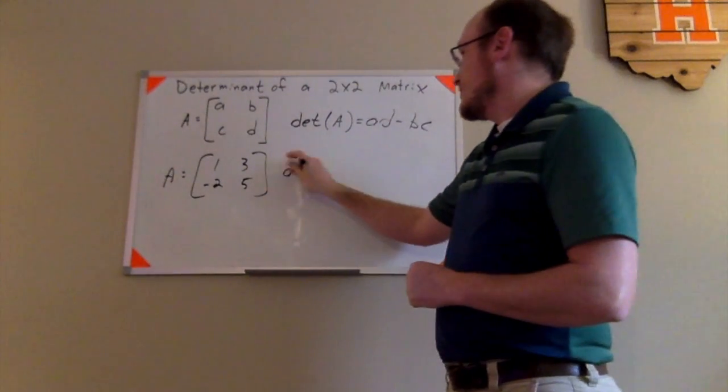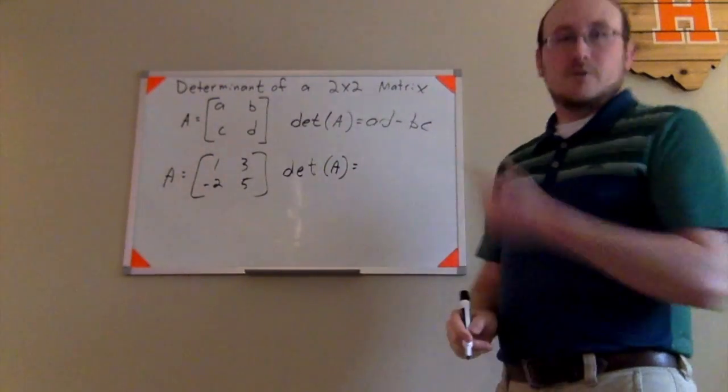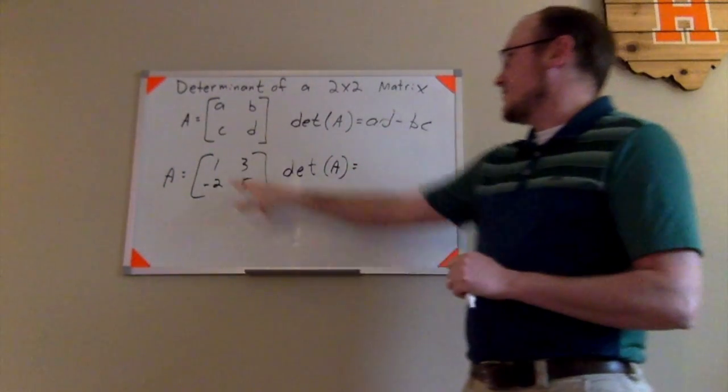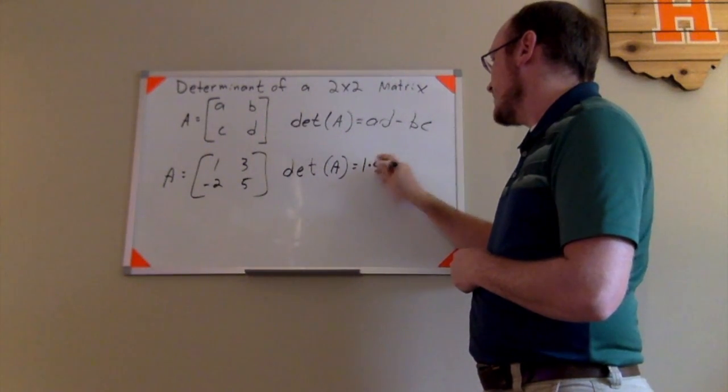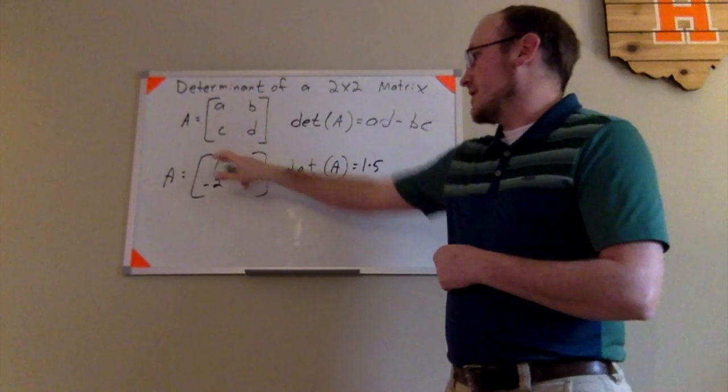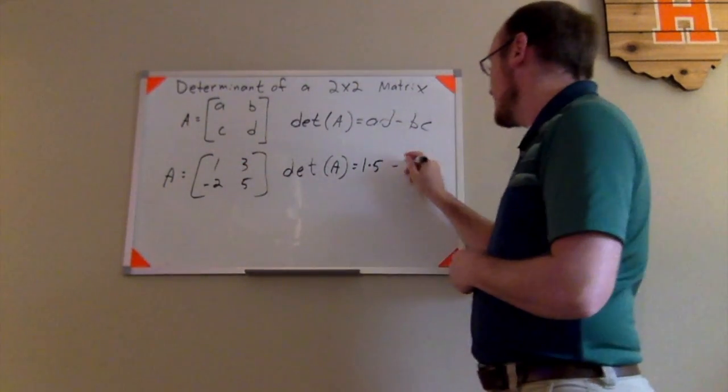And I want to find the determinant of matrix A. Well, according to this formula, that would be equal to 1 times 5. Go ahead and write that out, 1 times 5, that's the product of that diagonal, minus 3 times negative 2.